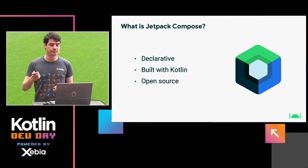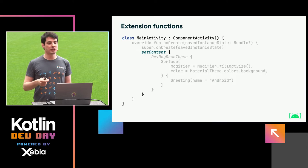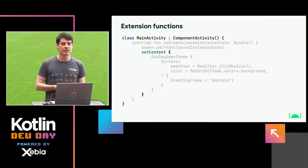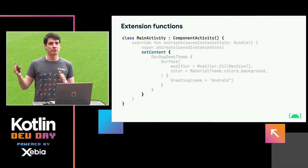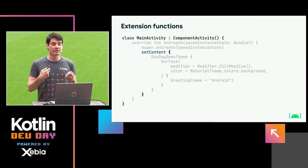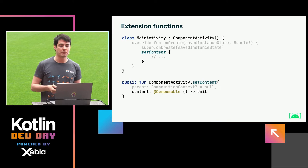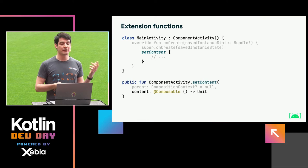Let's start exploring some of the APIs that Compose uses, beginning with extension functions. The entry point we've seen — the call to setContent — is actually already an extension function. Compose is not part of the OS itself; instead it ships as an unbundled library. So the entry point is part of that library, which simply extends the activity type. setContent is a regular function, but as a parameter it takes a function type which is a composable function.